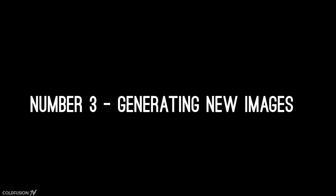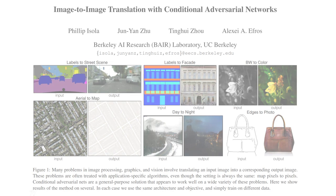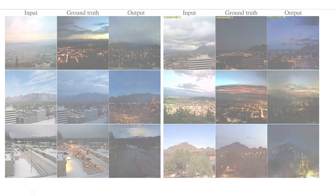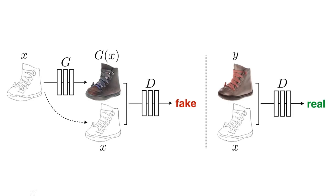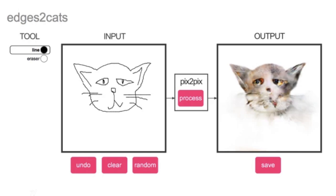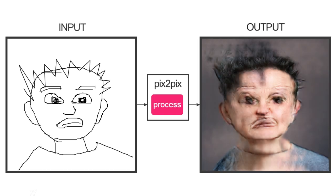Number three: generating new images. Pix2Pix is a deep learning neural network that generates new images based on input. It was trained to perform multiple specific tasks: create real street scenes from colored shapes, create a drawn map from an aerial photo, turn day scenes into night, or make a photorealistic image just from an outline. Pix2Pix uses two neural networks where one generates images and the other judges whether they are real — these two networks try to fool and improve each other in a setup known as a generative adversarial network. There's a simple web app to try the edge-outline part; links will be below.